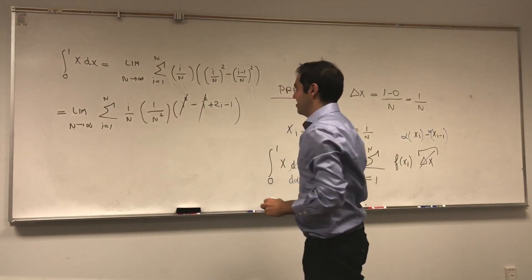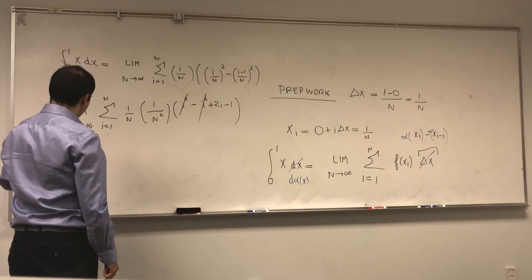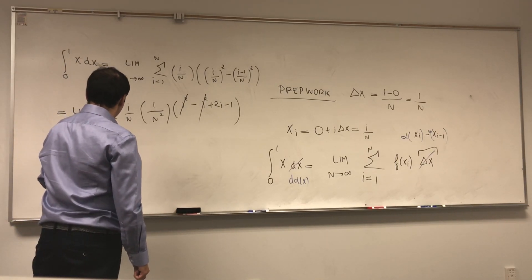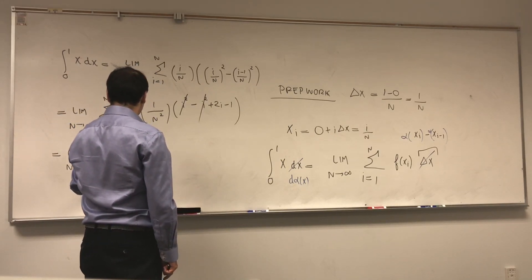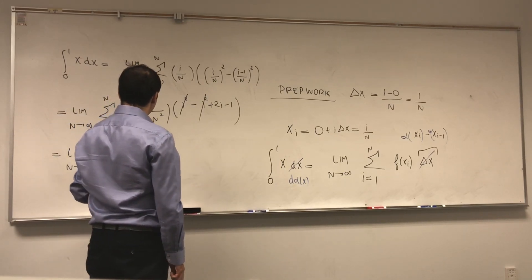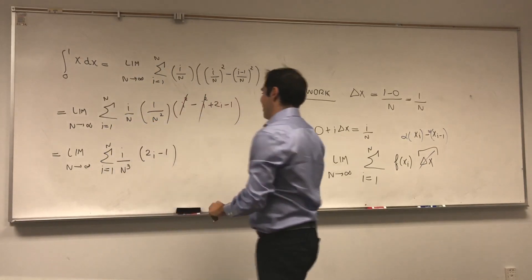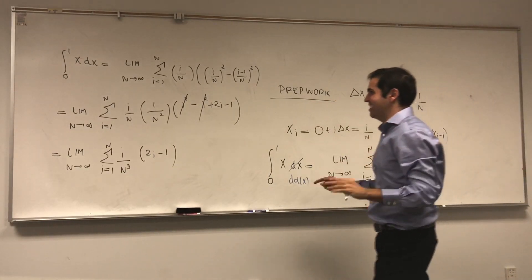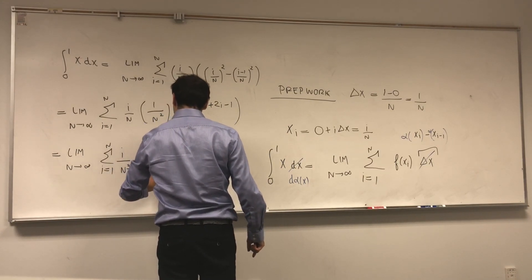This cancels out, and you're left with limit n goes to infinity of sum from 1 to n of i over n cubed, I guess. This cancels out, of 2i minus 1. And I just want to remark something that's very important. Remember that alpha of x was x squared.